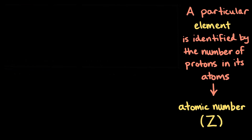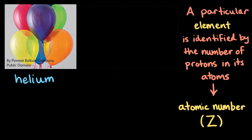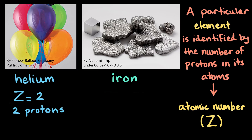For example, helium has an atomic number of two. That means that every helium atom has two protons. And here's another example, iron. Its atomic number is 26, so every iron atom has 26 protons.